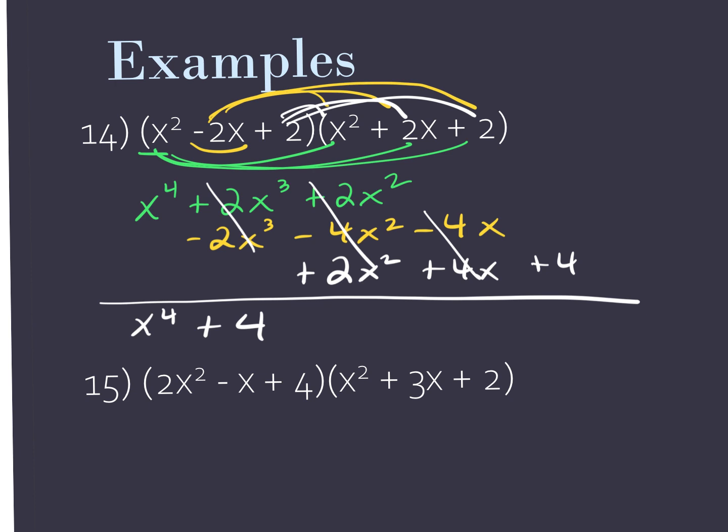It doesn't always happen like this where everything cancels out, except for two things. The next one you're going to see — everything's going to end up staying. We're going to have a representation of all of the exponents. So let's try the next one.